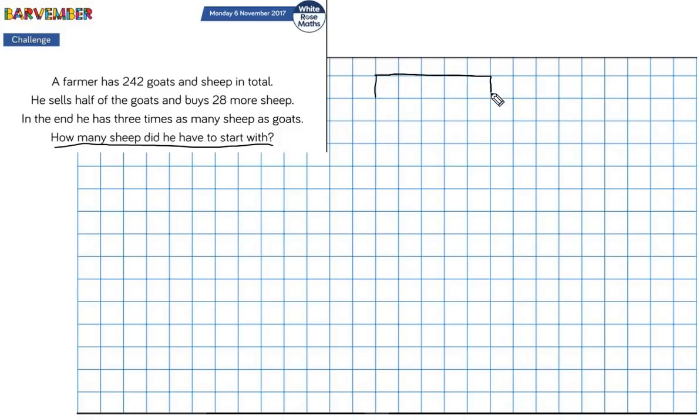I'm going to draw a bar model. Okay, and it says in total 242. So this is going to be 242. Fantastic. Okay, and what is this? This is goats and sheep. Great. I'm fairly happy with that.